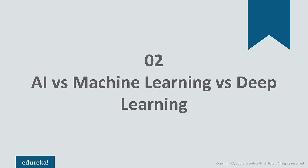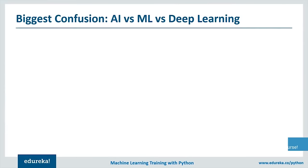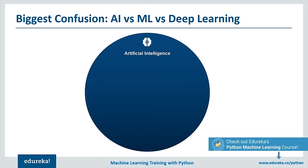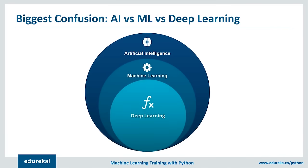Now let's discuss AI versus machine learning versus deep learning. Artificial intelligence is a broader umbrella under which machine learning and deep learning come. Deep learning is also a subset of machine learning. So all three — AI, machine learning, and deep learning — are subsets of each other.